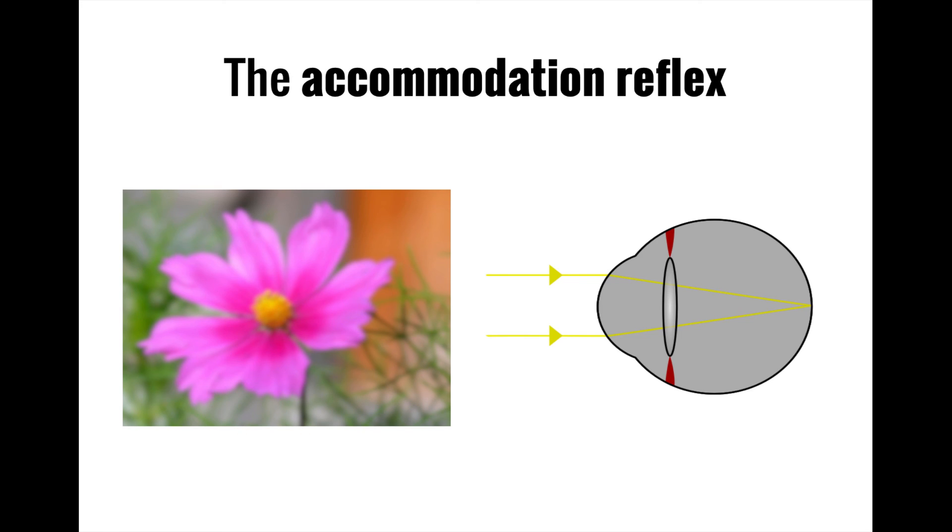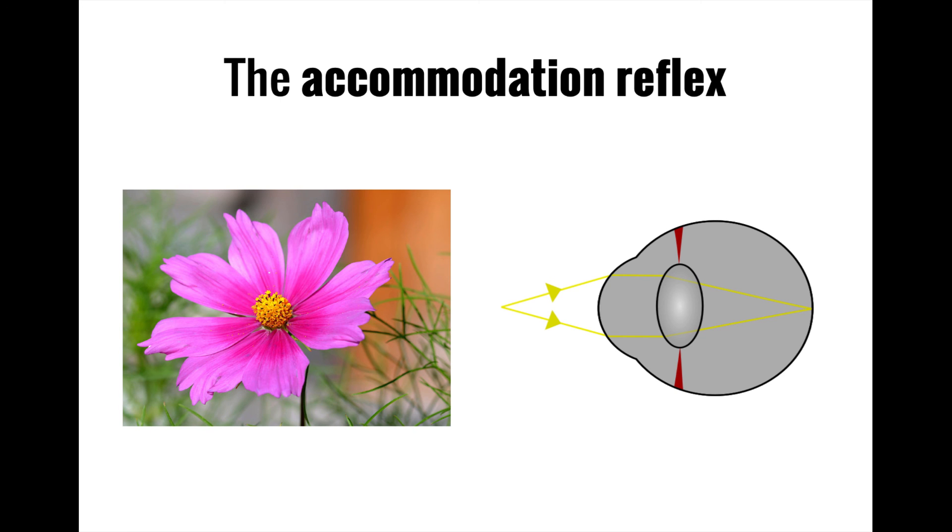The second pupillary reflex, known as the accommodation reflex, also changes the size of the pupil, but this time the goal is different. Instead of trying to alter the amount of light coming in, this time the pupils are constricting to try and change the shape of the lens so that they can better focus on nearby objects.